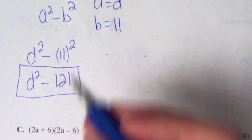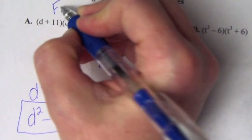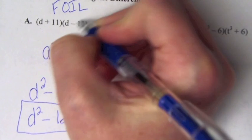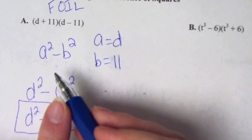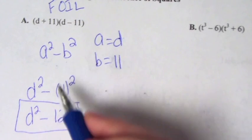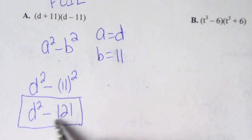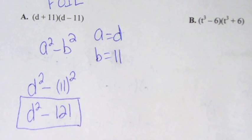If we were to FOIL this out, the middle two terms actually cancel — that's why we end up with only two terms. This is just a shortcut to foiling; we're doing the exact same thing.